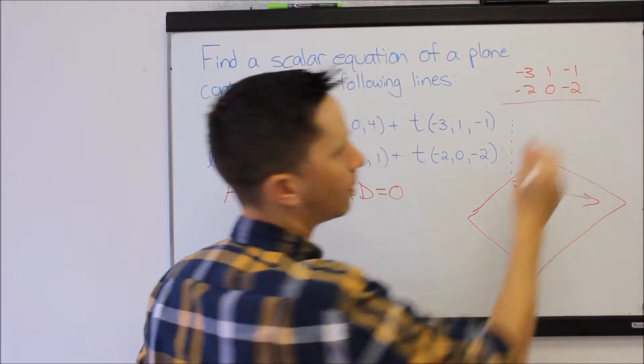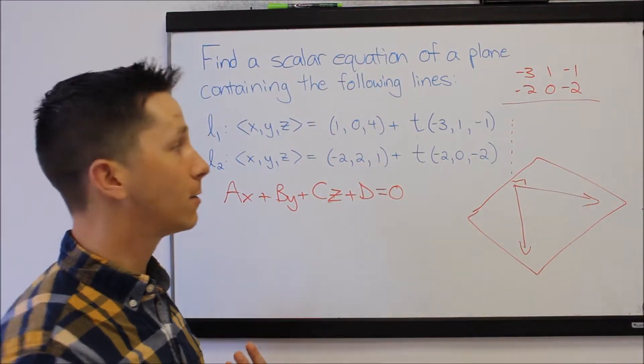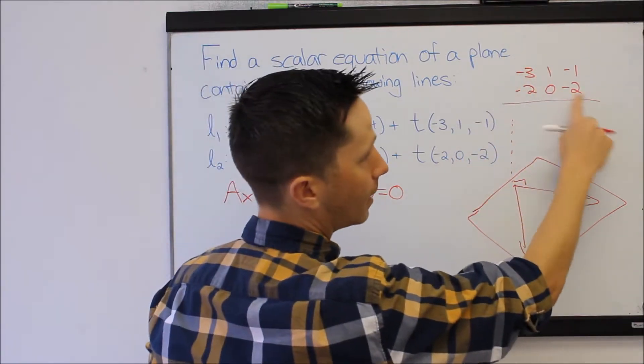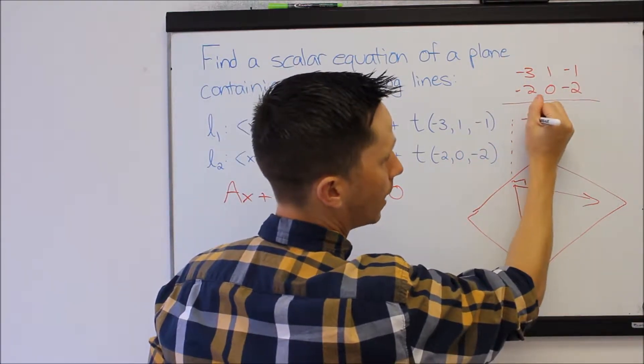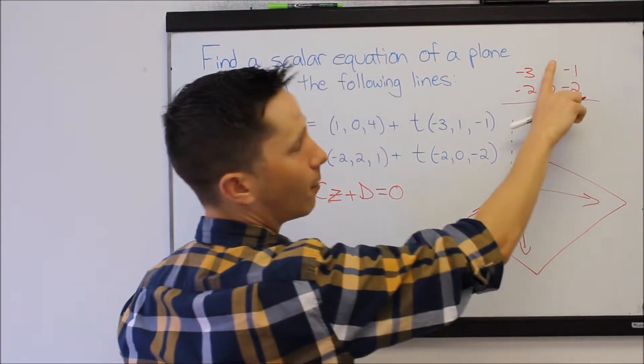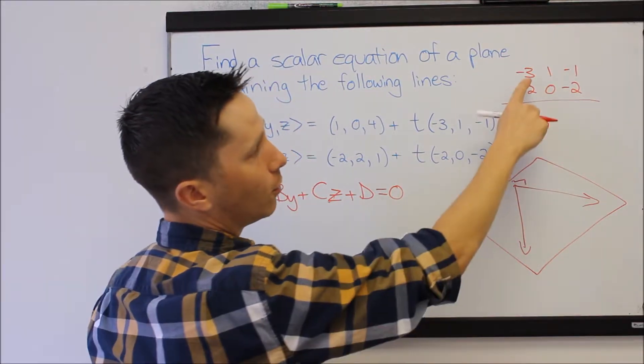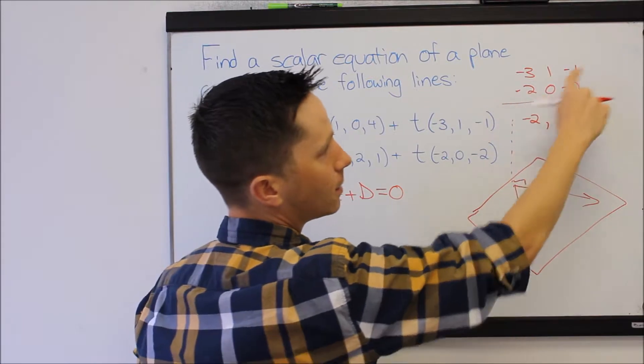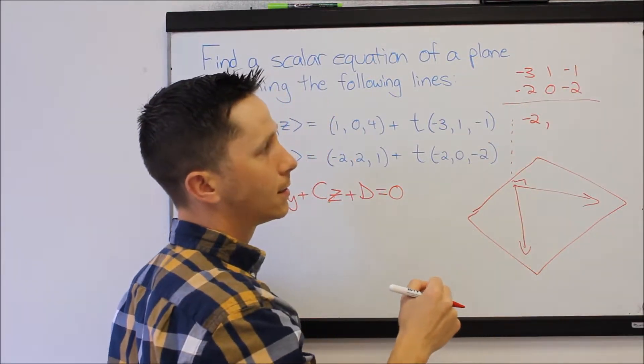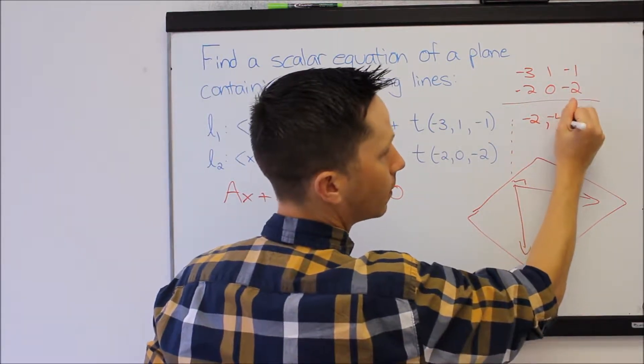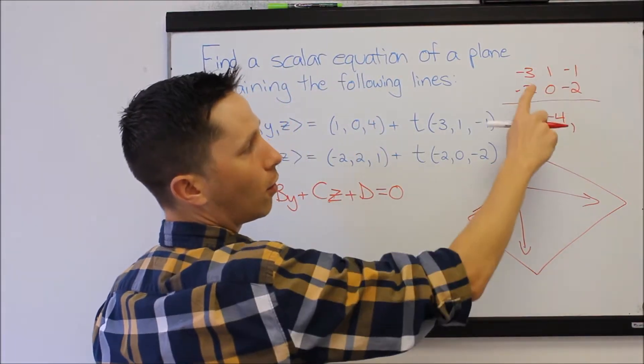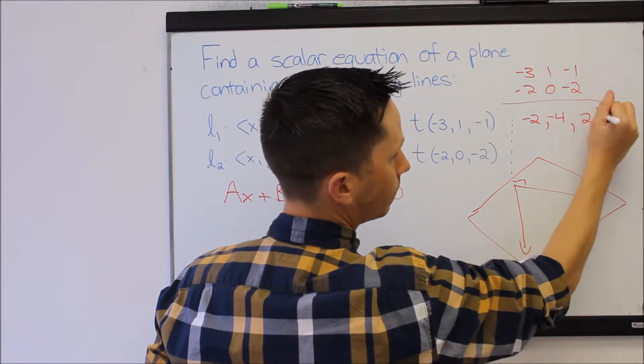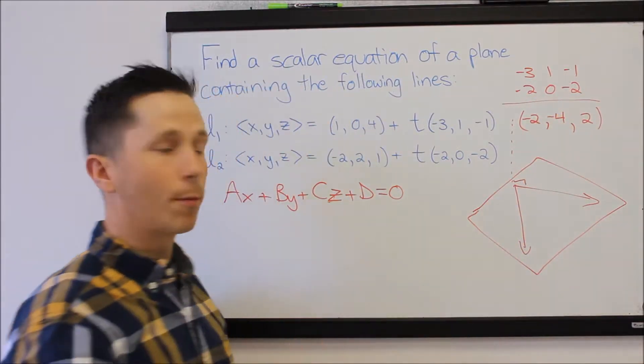So I'm going to cross product these. There's many ways to do the cross product, but here's how I do it. I cover up the first column and then cross negative 2 minus 0, so it'll be negative 2. And I cover up the second column and I do 6, negative 3 times negative 2 is 6, minus 2, which is 4, but I make it negative because it's the middle term. And then I cover up the third column and I do 0 minus negative 2, which is 2. So there is my normal vector.